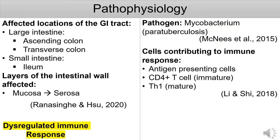Crohn's disease can affect anywhere from the mouth to the anus. The areas commonly affected are the large intestine — specifically the ascending and transverse colon — and the small intestine, specifically the ileum. All layers of the intestinal wall are affected, from the mucosa to the serosa, which is why it's transmural inflammation. The pathogen that enters the gut is Mycobacterium paratuberculosis. Listeria or Pseudomonas can also be pathogens that enter the gut. Cells contributing to the immune response are antigen-presenting cells, CD4 T cells, and TH1 cells.